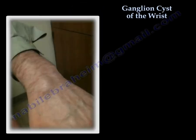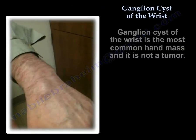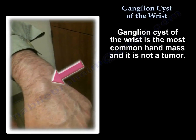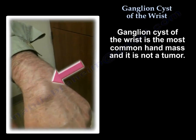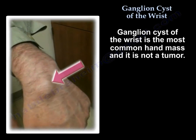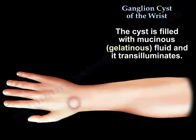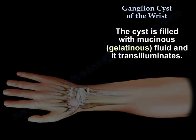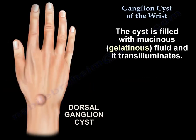Ganglion cysts of the wrist is the most common hand mass, and it is not a tumor. The cyst is filled with mucinous fluid, and it transilluminates — meaning it transmits light.